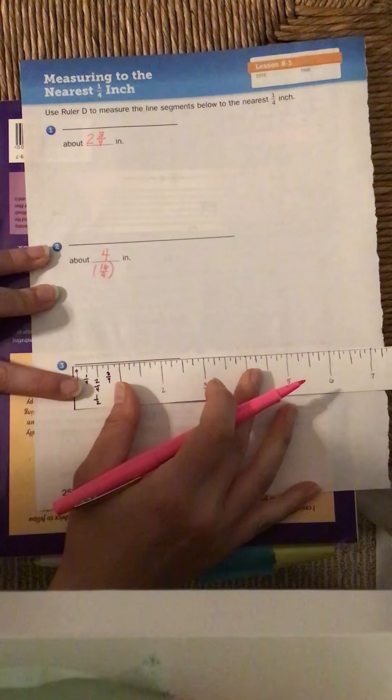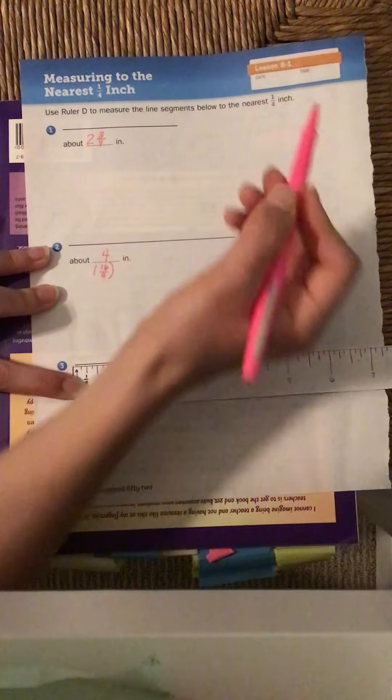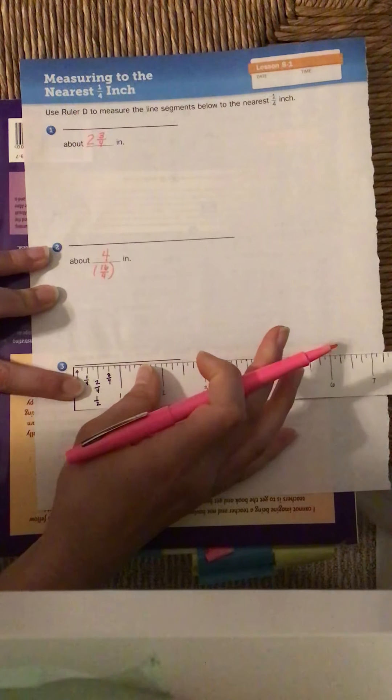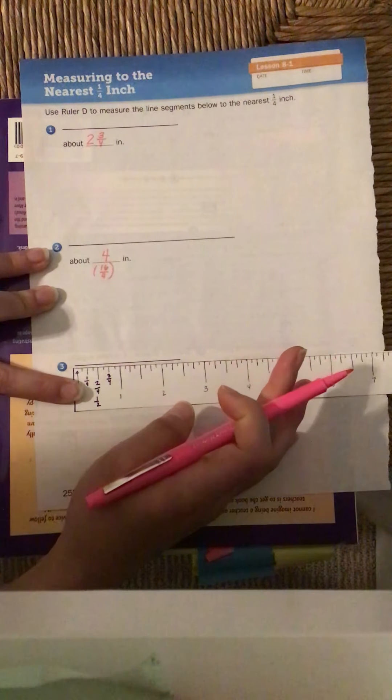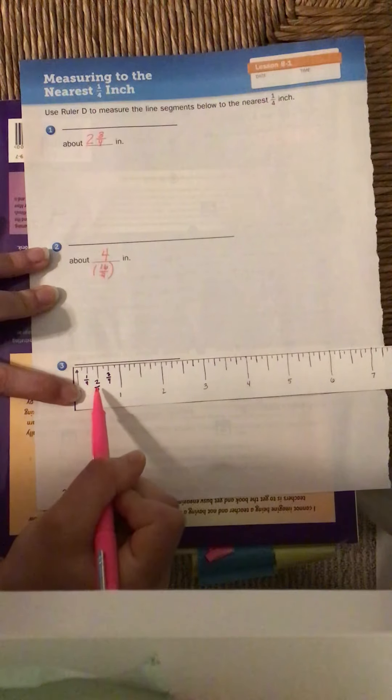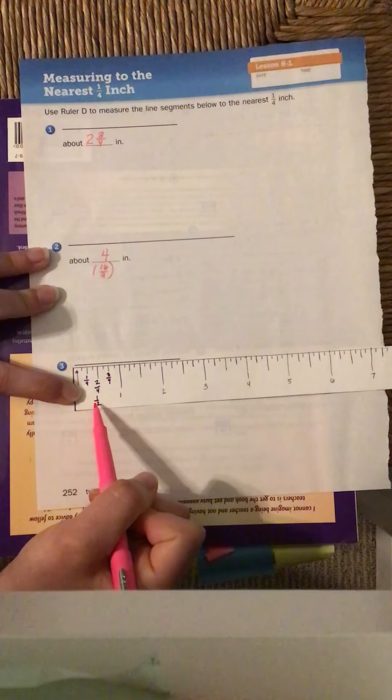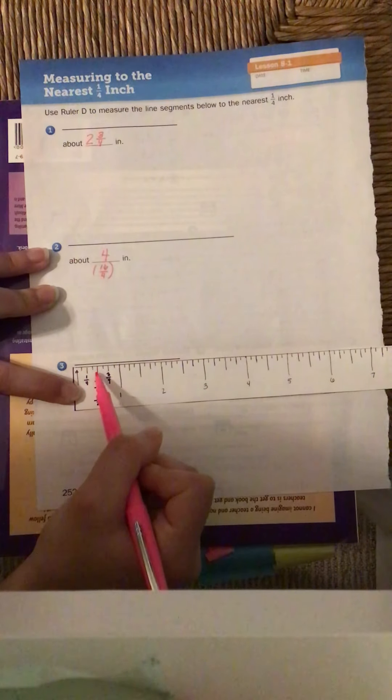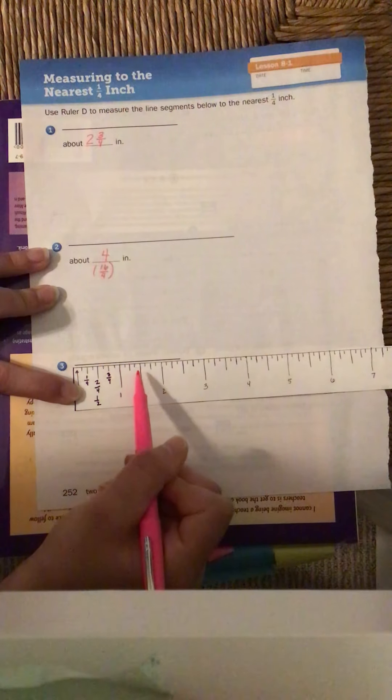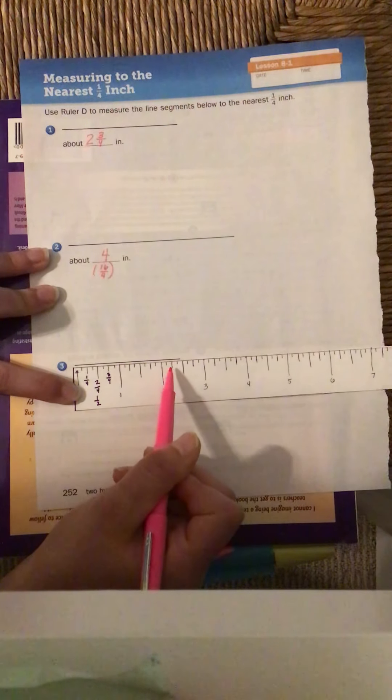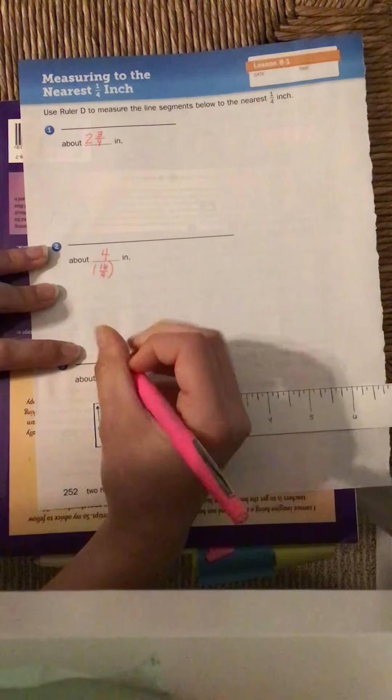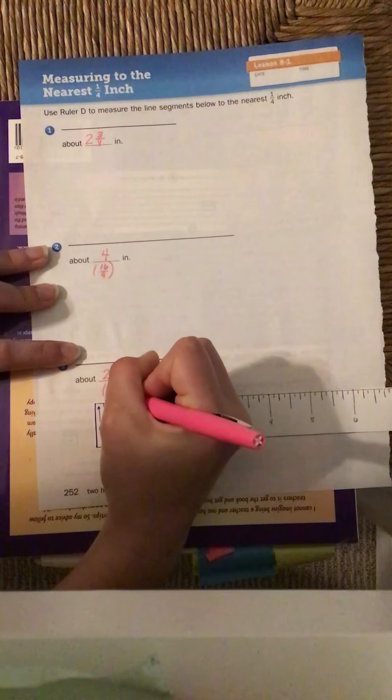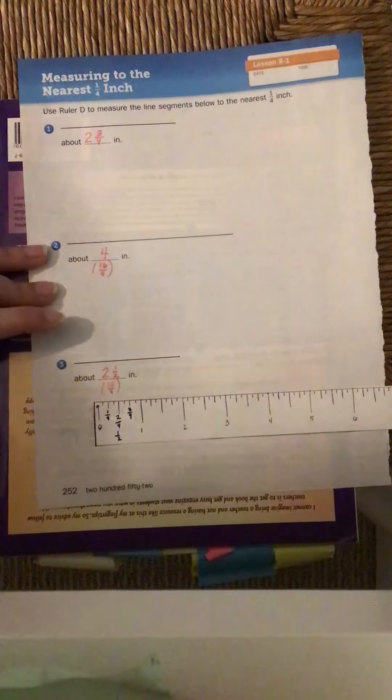Again, the reason I can write 2 1/2 inches, even though I'm measuring to the nearest fourth, is because when I count by fourths, I do hit the 1/2 mark. 2 fourths and 1/2 are the same fraction. They are equivalent fractions. 1 fourth, 2 fourths, 3 fourths, 4 fourths, 5 fourths, 6 fourths, 7 fourths, 8 fourths, 9 fourths, 10 fourths. So another name for 2 1/2 is 10 fourths.